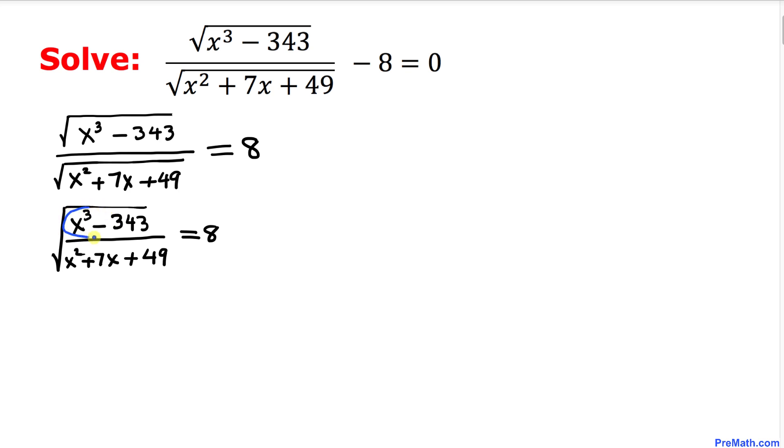Now let's focus on this numerator part, x³ - 343. As you can see, this 343 could be written as 7³. Therefore, I can write this one as x³ - 7³.